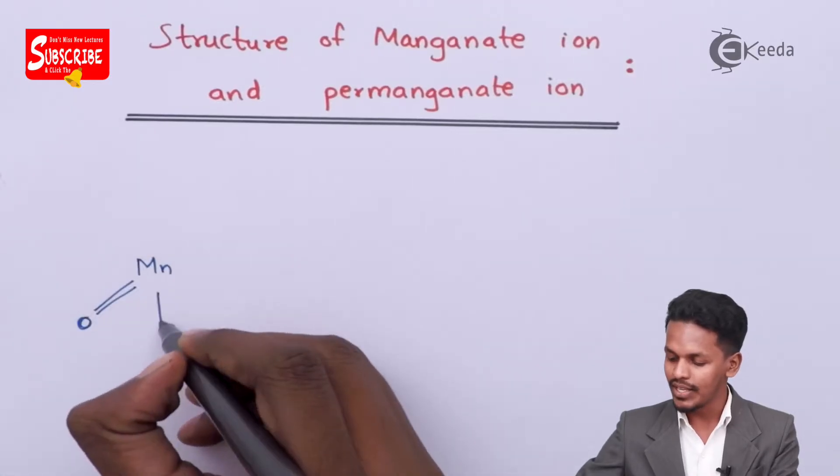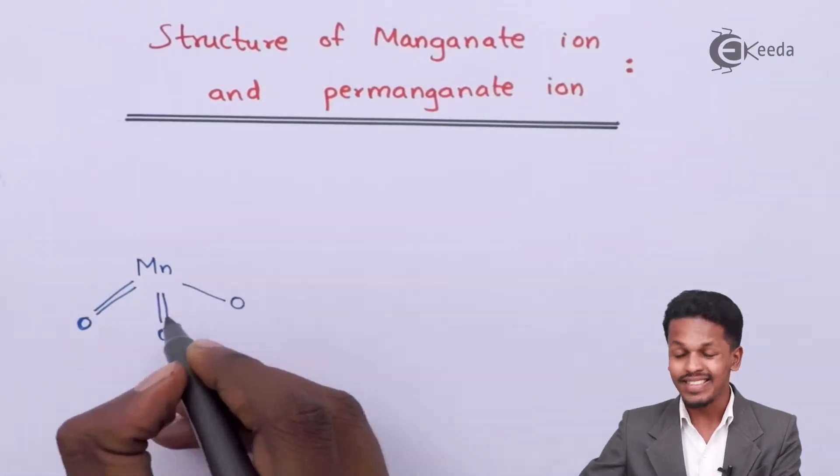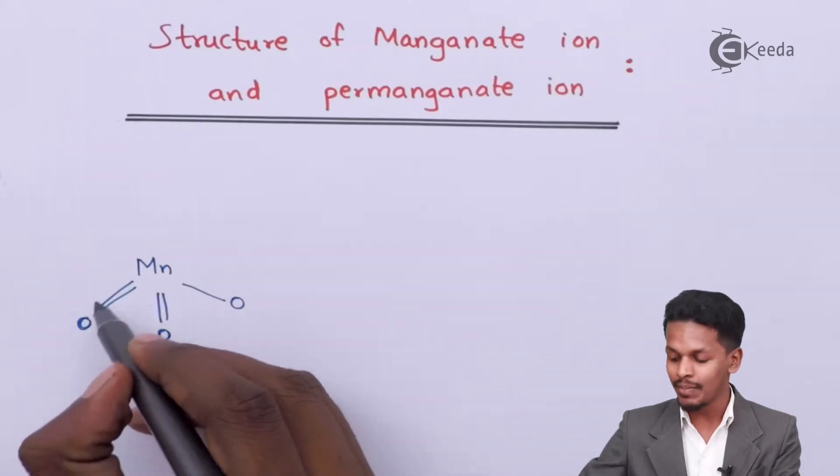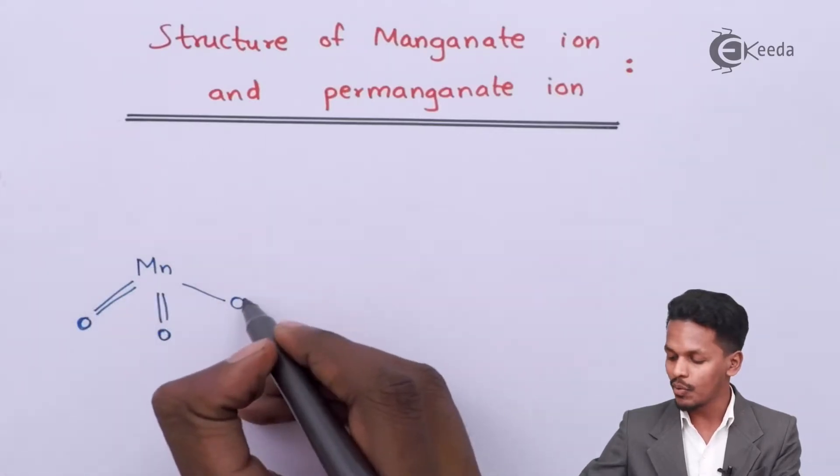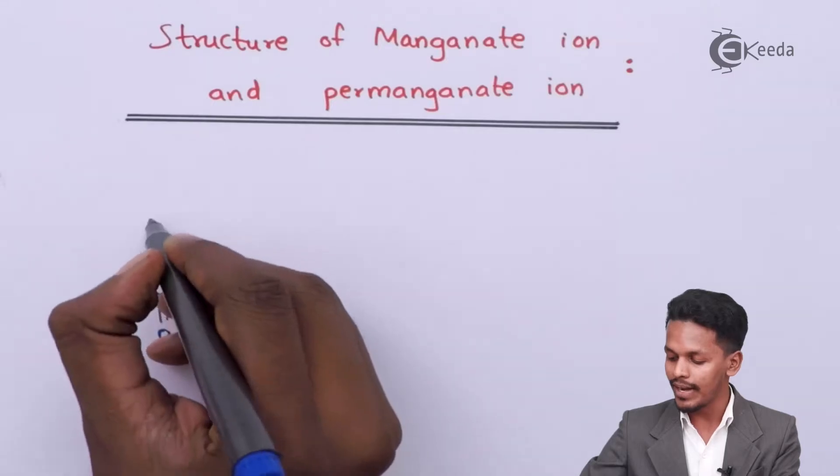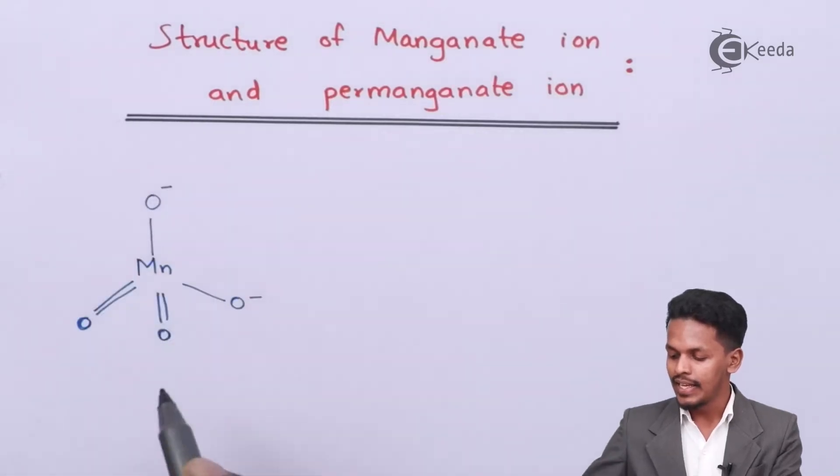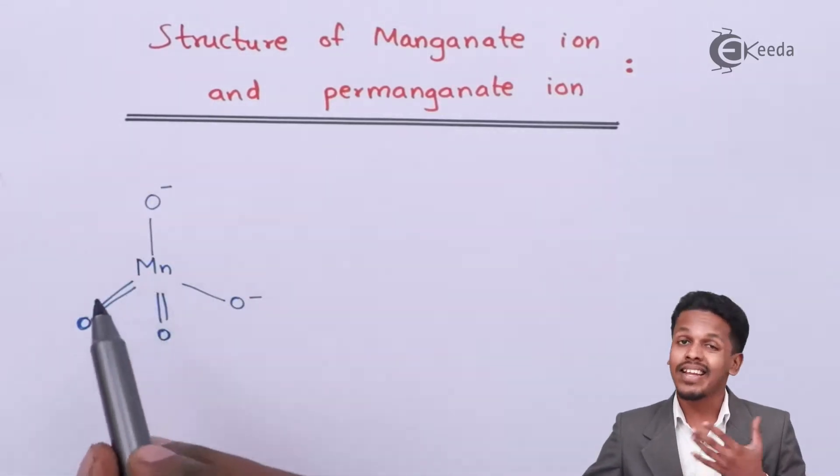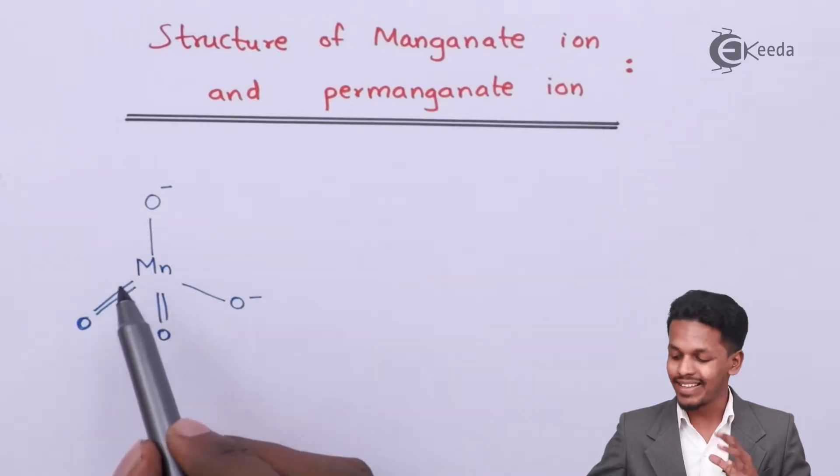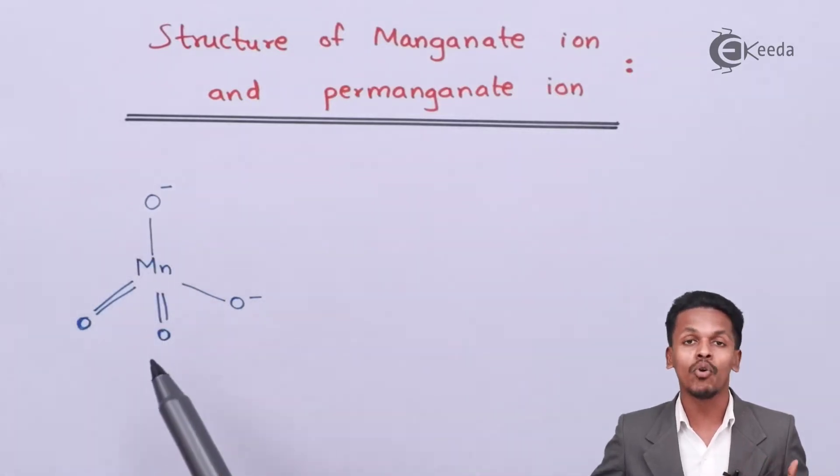As you can see, there is a double bond between this oxygen atom and this manganese atom. And this oxygen atom forms a single bond. The manganese atom undergoes sp3 hybridization and that's the reason the structure is found to be tetrahedral.